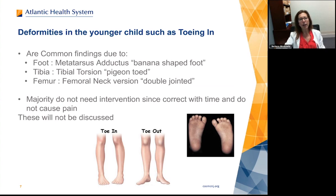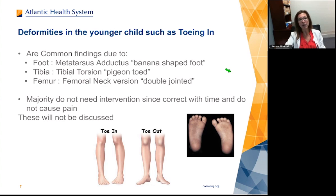Deformities in the younger child causing in-toeing can come from various parts of the lower extremity. At the foot itself, you can have metatarsus adductus — a banana-shaped foot. This is very genetic, runs in families, and for the most part tends to resolve over time. But sometimes it does need to be casted or even treated surgically, though very rarely. So if you have somebody that's not getting better, send them our way.